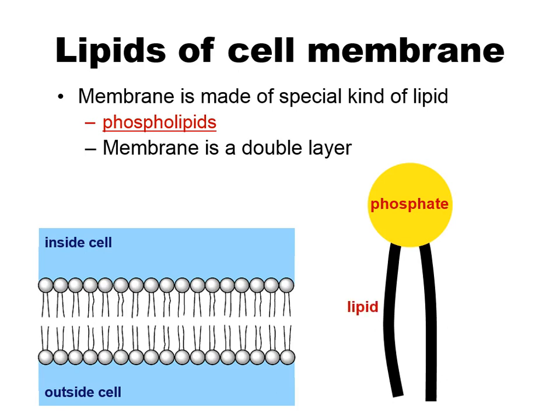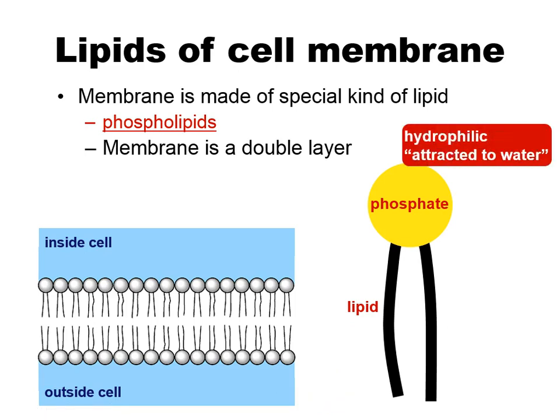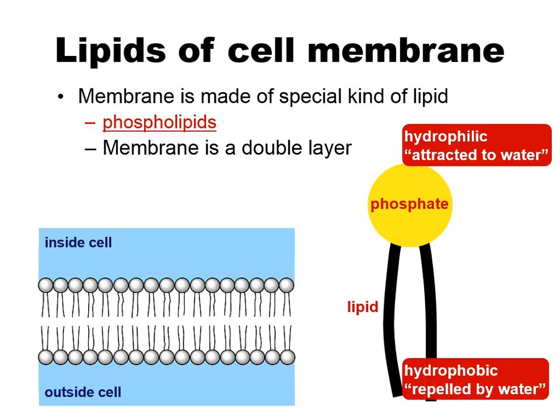So you have your phosphate head and two fatty acid lipid tails. The phosphate head is going to be hydrophilic — it's going to be attracted to water because it's polar. Remember, like attracts to like, so your polar phosphate head is going to be attracted to water. Your lipid or fatty acid tails are going to be hydrophobic because they're nonpolar, so they're going to be repelled or afraid of water.